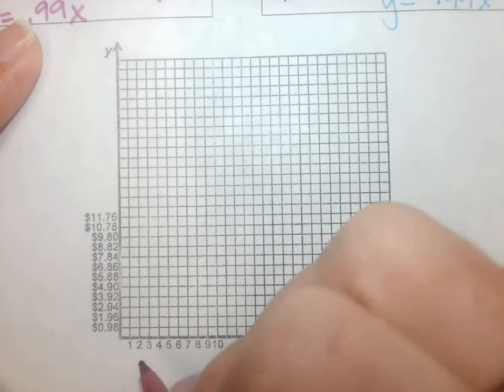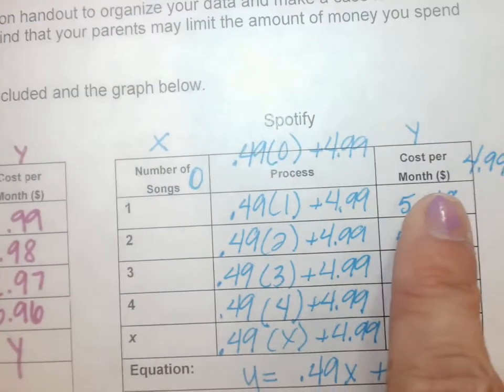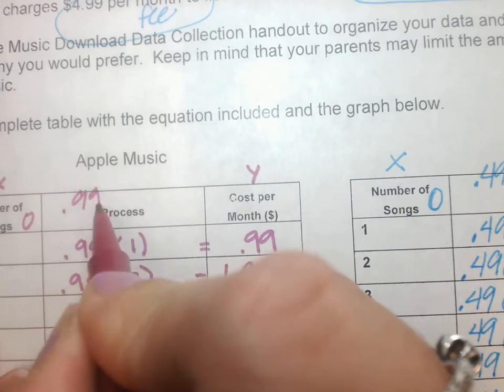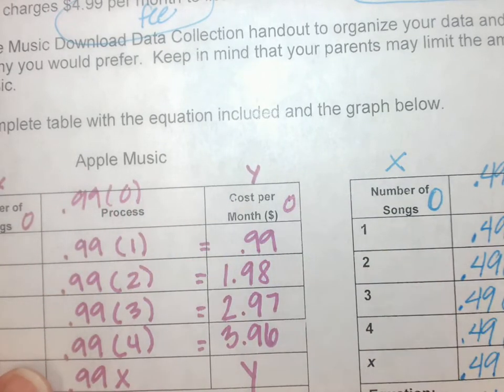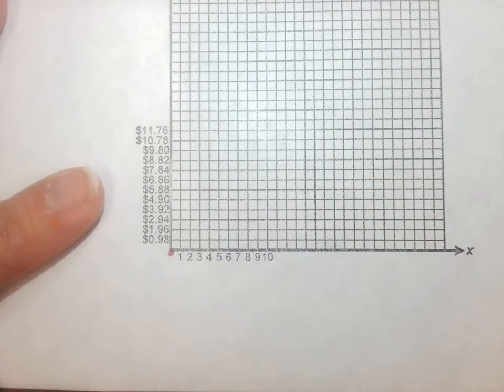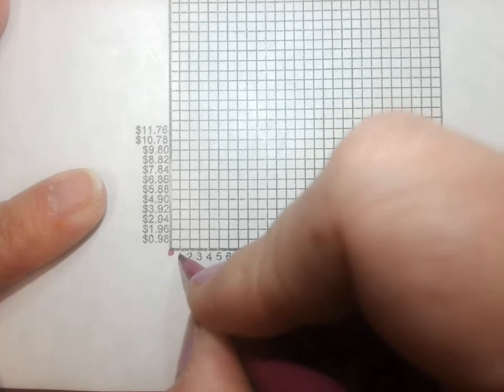I'm looking back at my table. I didn't do zero here, so 0.99 times zero would just be zero. So I know that's going through the origin. One is 99 cents, so it's like a little bit above.